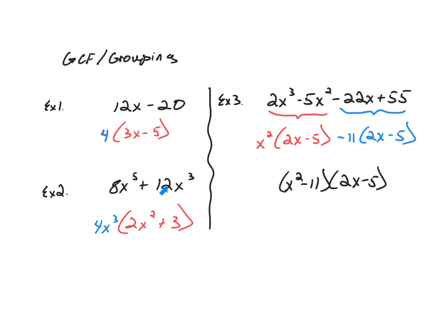In example 2 we have 8x to the 5th plus 12x cubed. Both terms have the variable x. The largest number that goes into both 8 and 12 is 4, so the GCF of the coefficients is 4. Then x cubed can be factored out because x to the 5th also has a factor of x cubed. So 4x cubed is the greatest common factor of both terms, and then what we multiply 4x cubed by is 2x squared plus 3. You can check: 4 times 2 is 8, and x cubed times x squared gives x to the 5th (adding exponents 3 plus 2), and 4 times 3 is 12 with x cubed remaining.